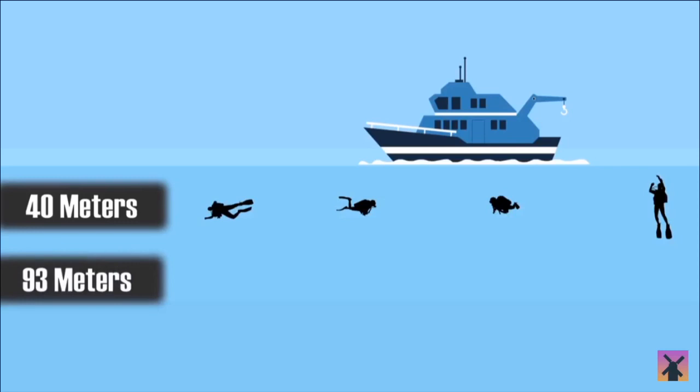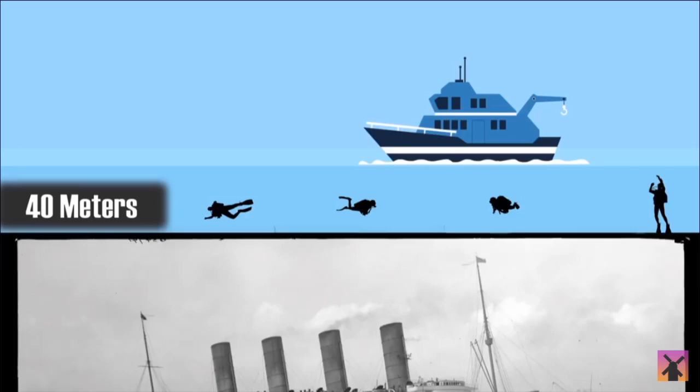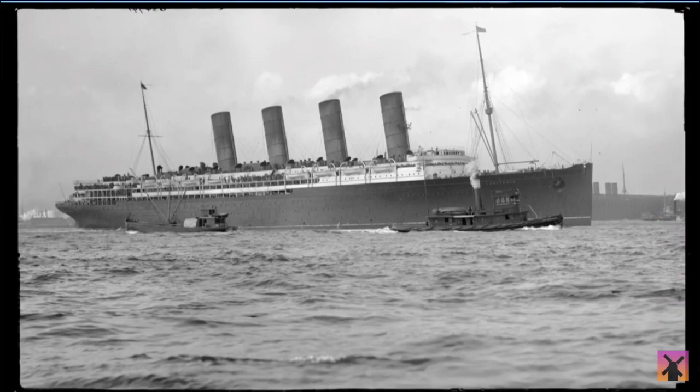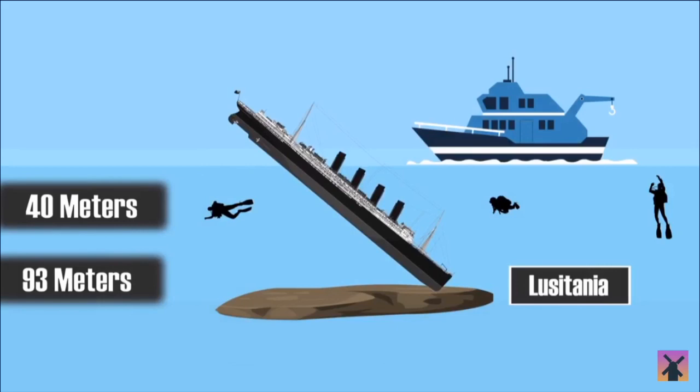A little further down at 93 meters is where the wreck of the Lusitania. I heard of the Titanic, but I never knew there's something called the Lusitania. Interesting because the Lusitania itself is 240 meters long, which means that it sank in water shallower than it is long. So if the ship was standing on its stern or bow, it would be sticking out of the water.